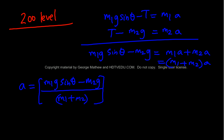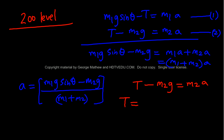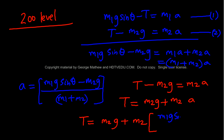Go back to equation 2: T minus M2g equals M2a, so T equals M2g plus M2 times A. And A is (M1g sin theta minus M2g) divided by (M1 plus M2). Substituting gives the full expression for tension T.